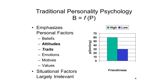Traditionally, personality and social psychology have historically emphasized different aspects of Lewin's formula. Traditional personality psychology assumes that behavior is primarily determined by features of the person, such as his or her beliefs, attitudes, values, emotions, motives, and personality traits, and that situational factors are largely irrelevant. So from the point of view of personality psychology, behavior is largely a function of the person. For example, some particular behavior, like smiling, might occur as a function of some particular personality trait, like friendliness.